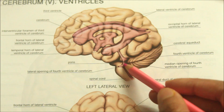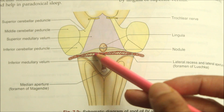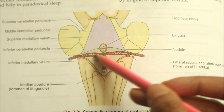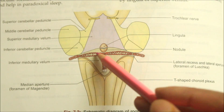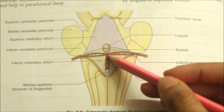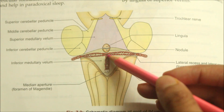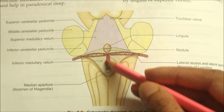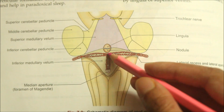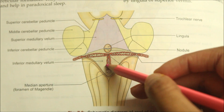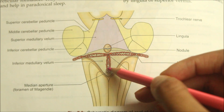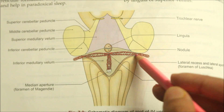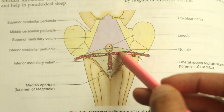The tela choroidea of the fourth ventricle is a double layer of pia mater which occupies the area between the cerebellum and the lower part of the fourth ventricle. The tela choroidea with vascular fringes covered by secretory ependyma forms the choroid plexus of the fourth ventricle, which is T-shaped. Each plexus consists of a vertical limb lying next to the midline and a horizontal limb extending into the lateral recess. The vertical limbs reach the median aperture and project into the subarachnoid space; the lateral ends of the horizontal limbs reach the lateral apertures. The arterial supply is from the posterior inferior cerebellar arteries.